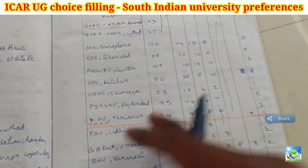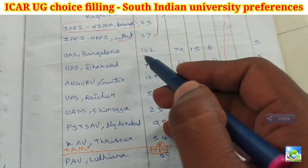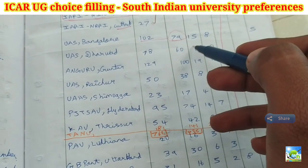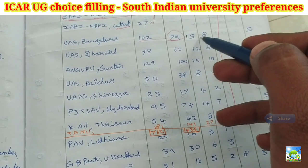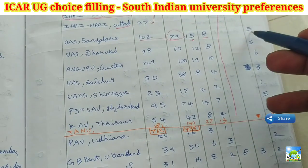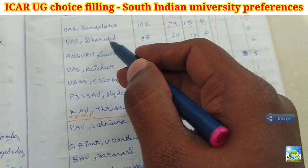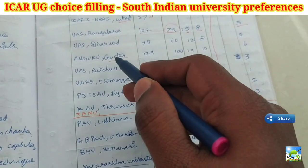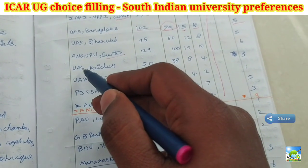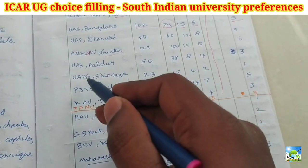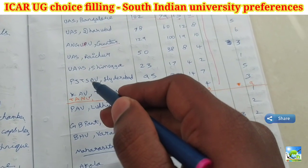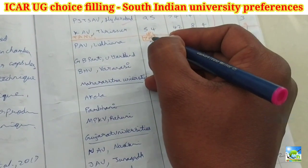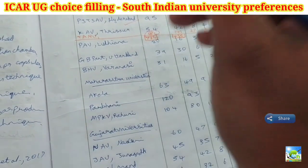Next you can go for UAS Bangalore — for agriculture it has 79 unreserved seats, SC category 15 seats, ST category 8 seats, and PWBD 5 seats. Next is UAS Dharwad, which is only for BSc Agriculture and not other courses. Then you can add ANGRAU Guntur — Acharya N G Ranga Agriculture University. Next, UAS Raichur, then UAS Shimoga, then PJTSAU — Professor Jayashankar Telangana State Agriculture University, Hyderabad. Next, KAU Thrissur.